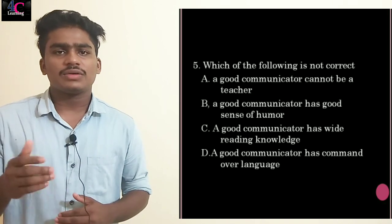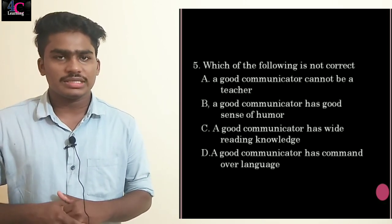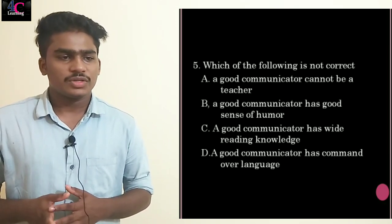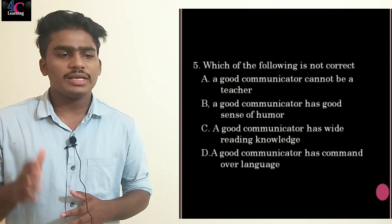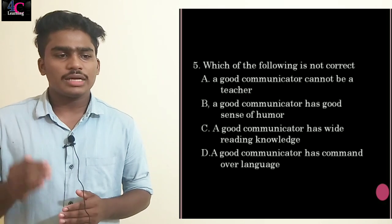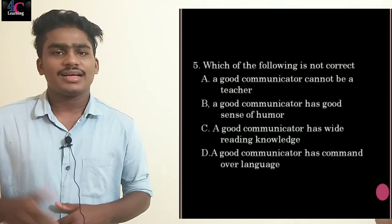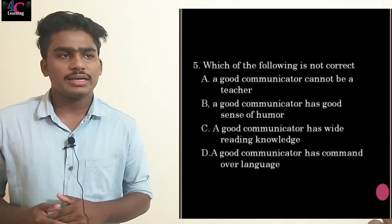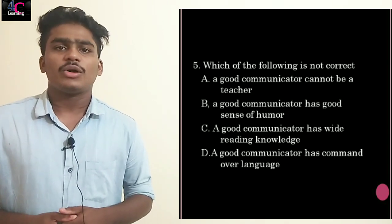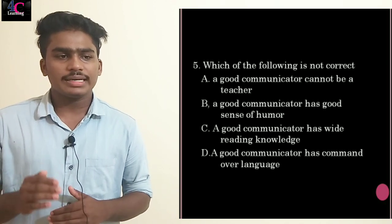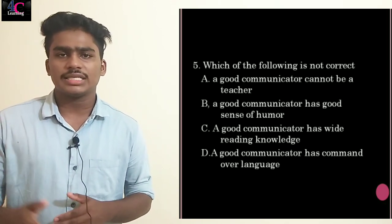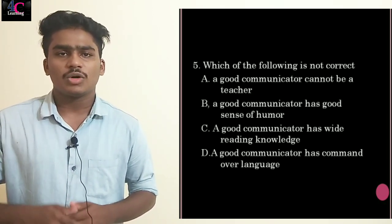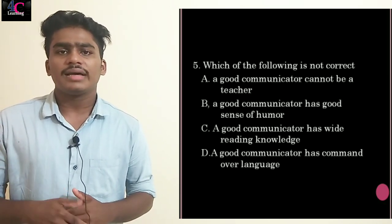Fifth question, asked in the 2012 UGC Net Examination: Which of the following statements is not correct? Option A: a good communicator cannot be a good teacher. Option B: a good communicator has a good sense of humor. Option C: a good communicator has wide reading knowledge. Option D: a good communicator has command over language. Option A is the correct answer because it is a false statement — communication is an essential qualification for becoming a good teacher.